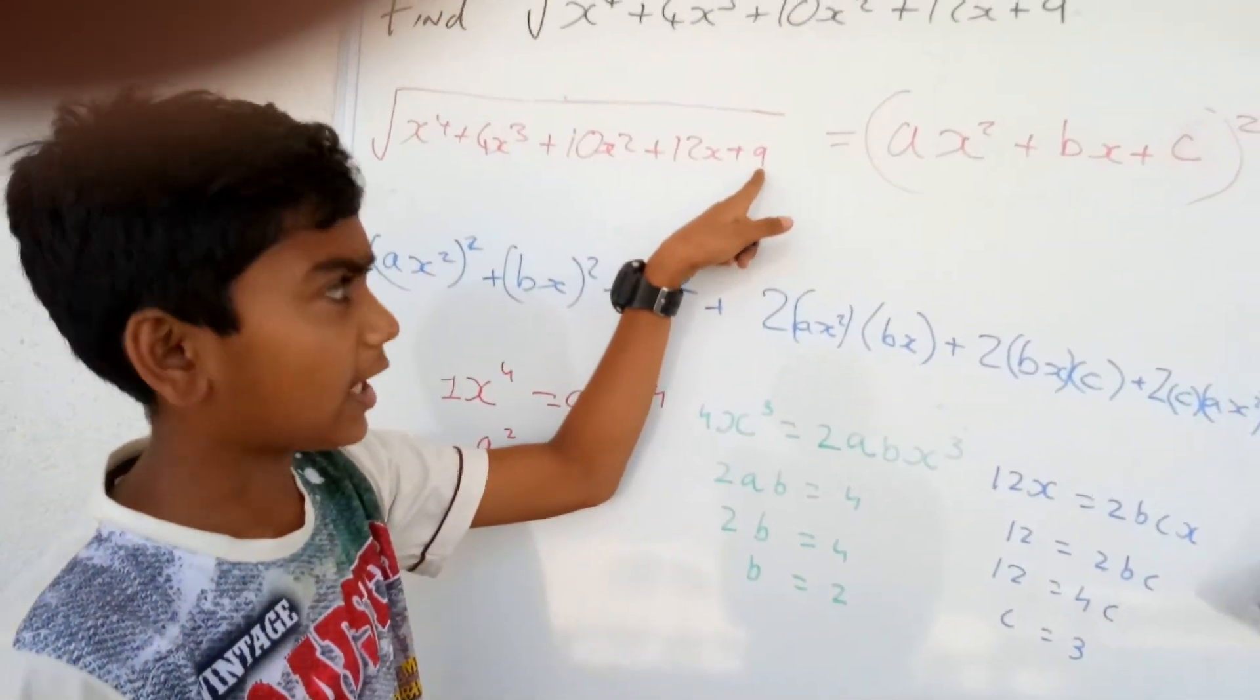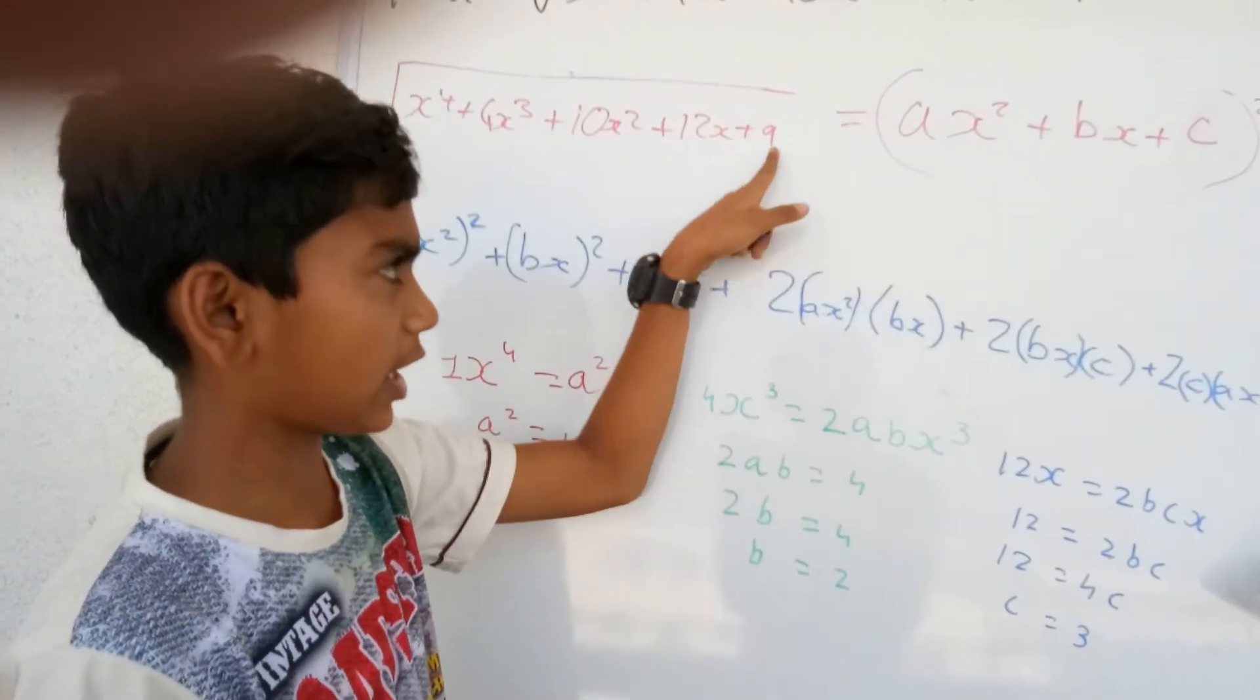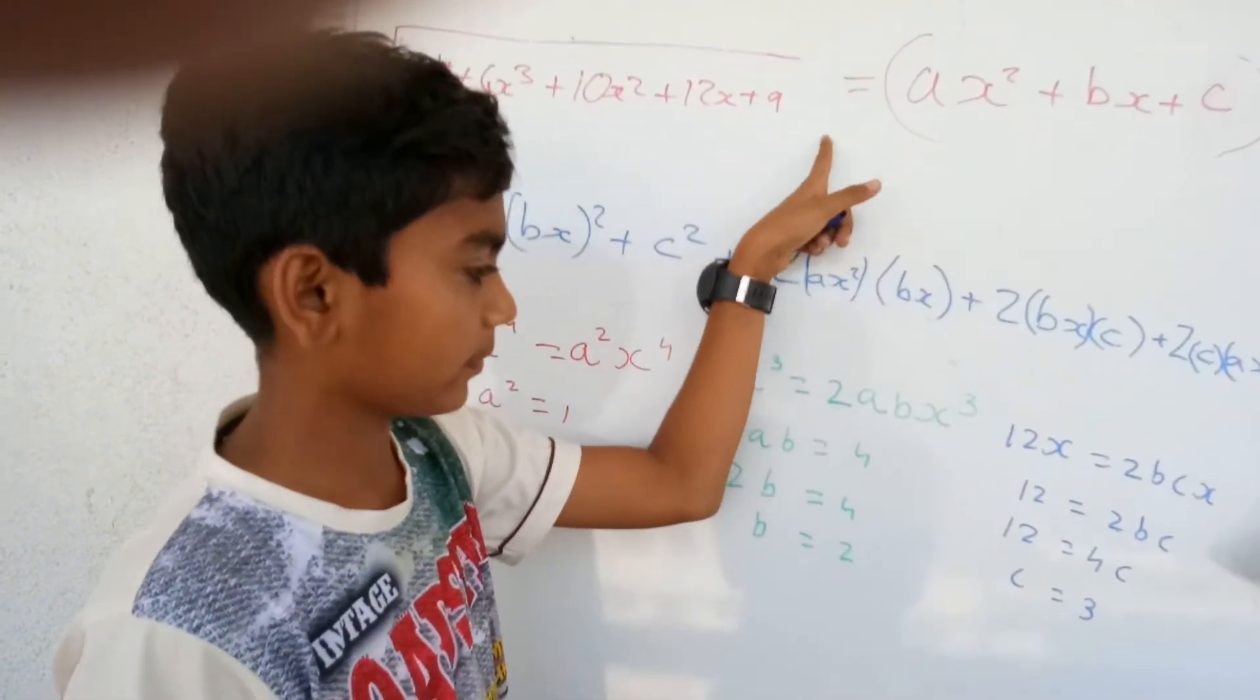Interestingly, we can get directly c value from this. c square equals to 9. So, c equals to 3.